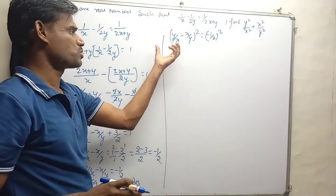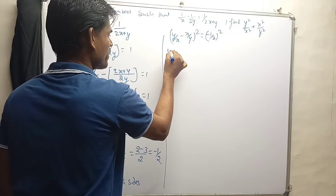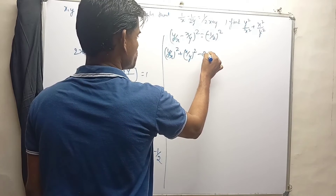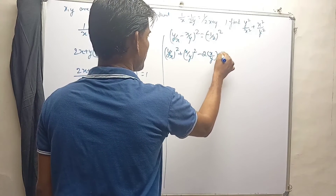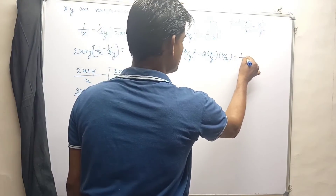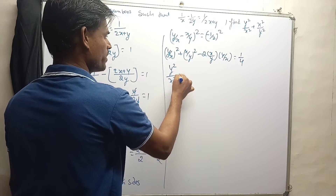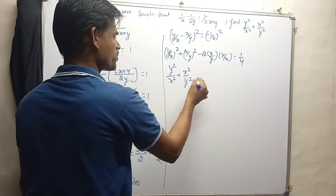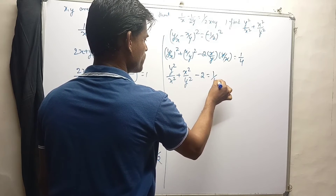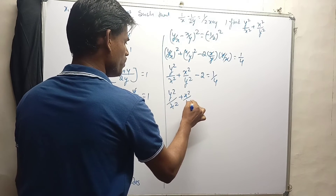This is in the form of (a minus b)², which equals a² + b² minus 2ab. Based on that, we can write (y/x)² + (x/y)² minus 2 times (x/y)(y/x) equals (minus 1/2)², which is 1/4. So y²/x² + x²/y² minus 2 equals 1/4, since x and x cancel and y and y also cancel.